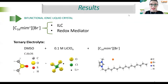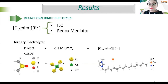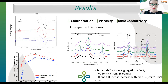Here I'm going to present some results we could obtain until now. As mentioned, it's only one year of the project. We are studying the imidazolium salt with 16 carbons in the chain, which is a solid ionic liquid and also an ionic liquid crystal. We could prove that this type of ionic liquid has redox mediator properties, which makes it a bifunctional catalyst for lithium batteries. We are using a ternary electrolyte with DMSO, lithium perchlorate, and the ionic liquid crystal with 16 carbons in the chain.